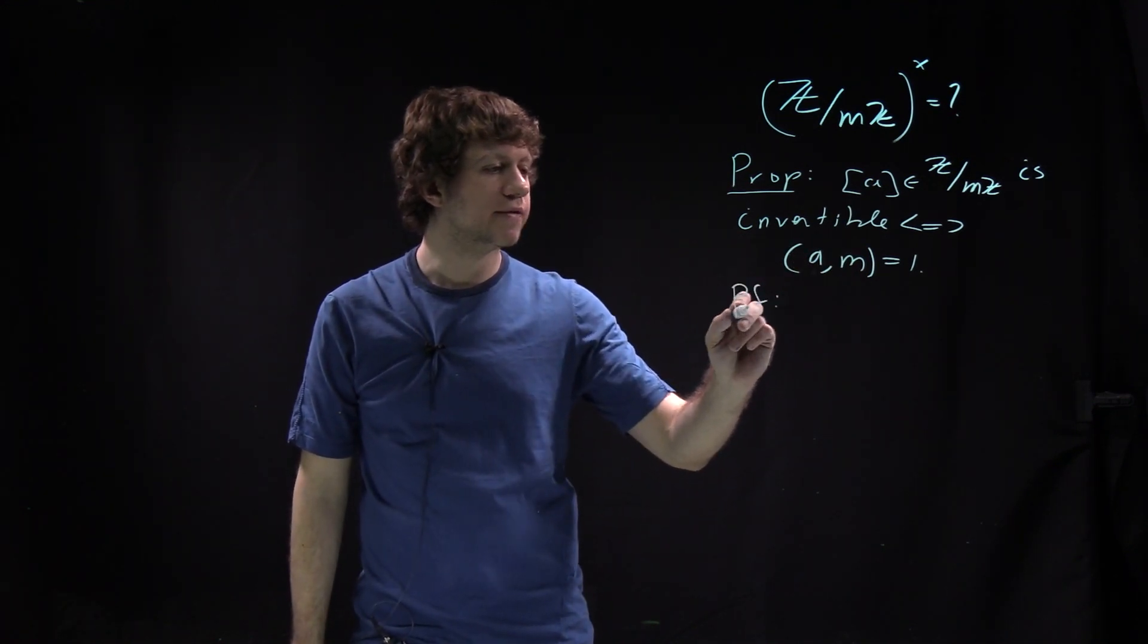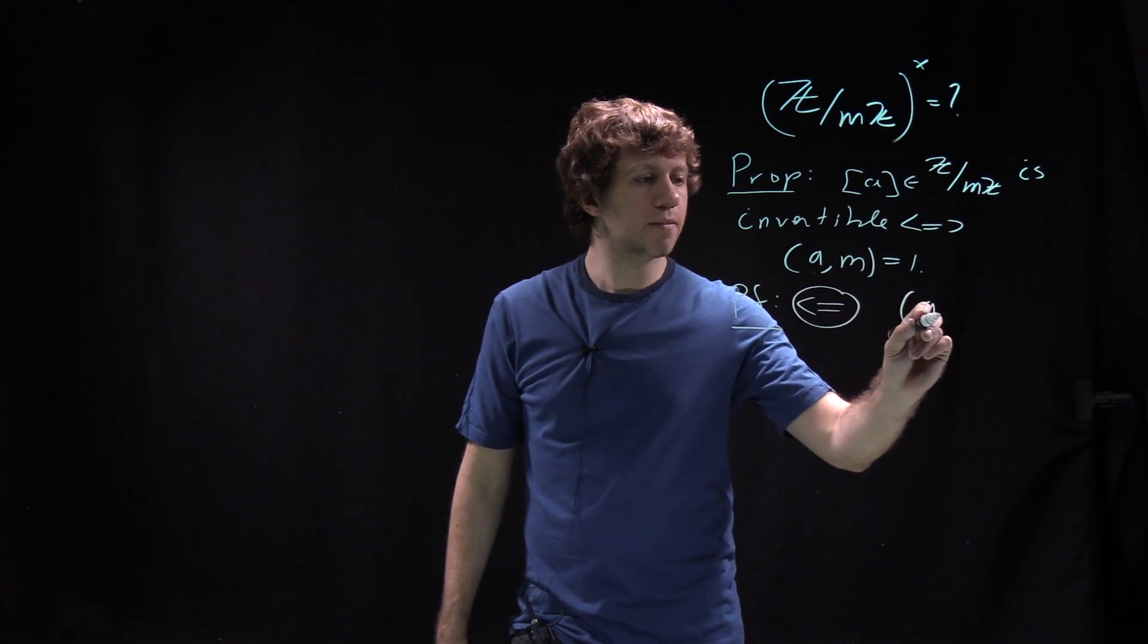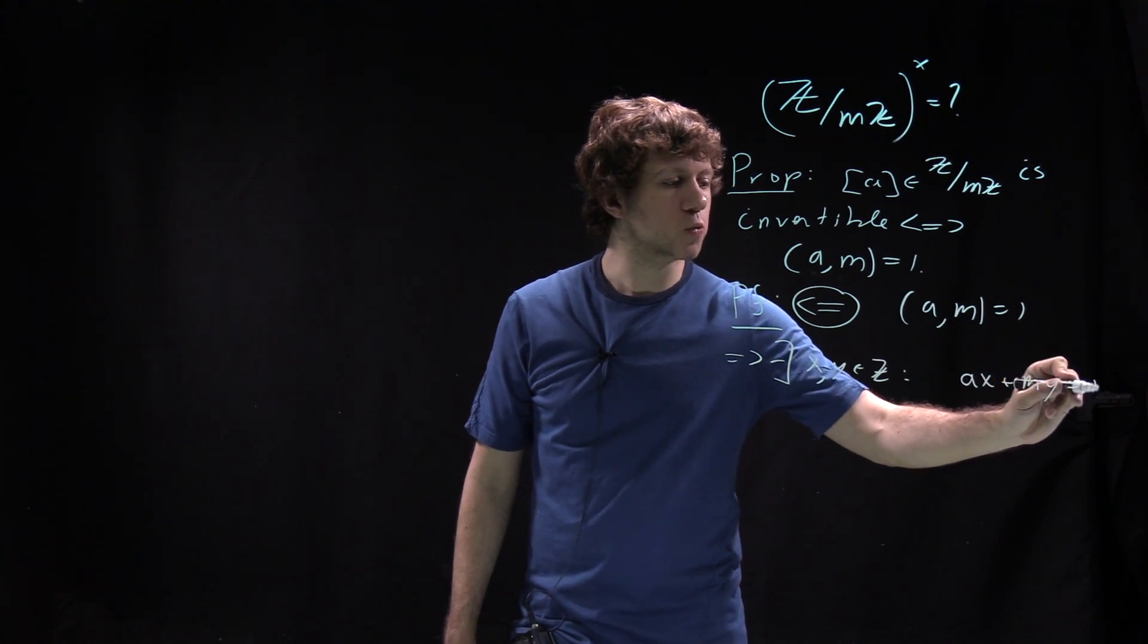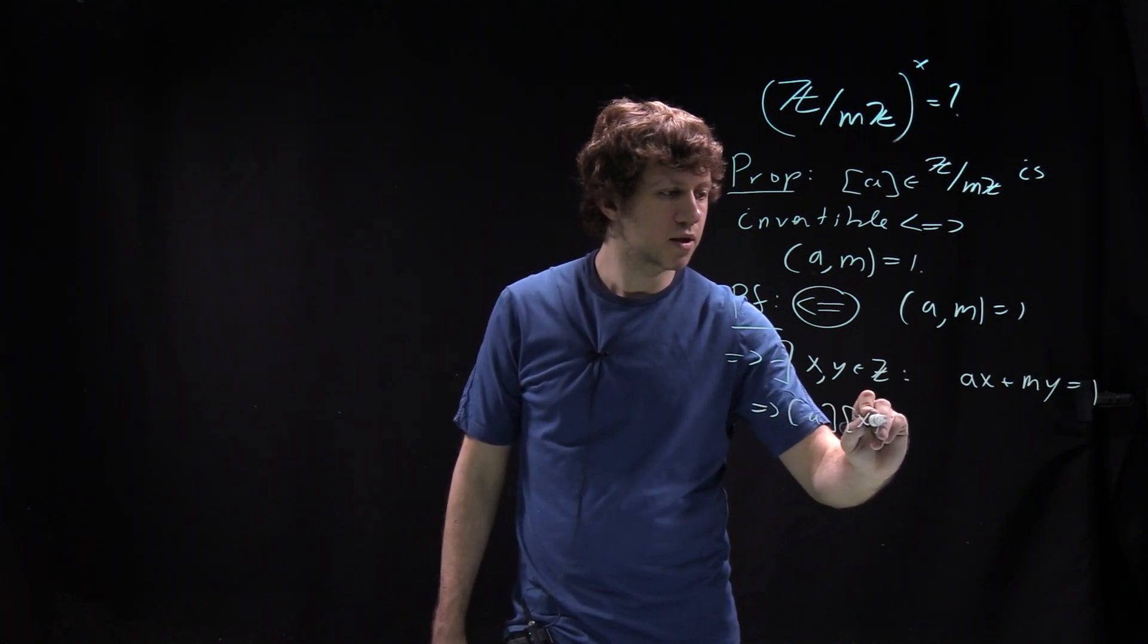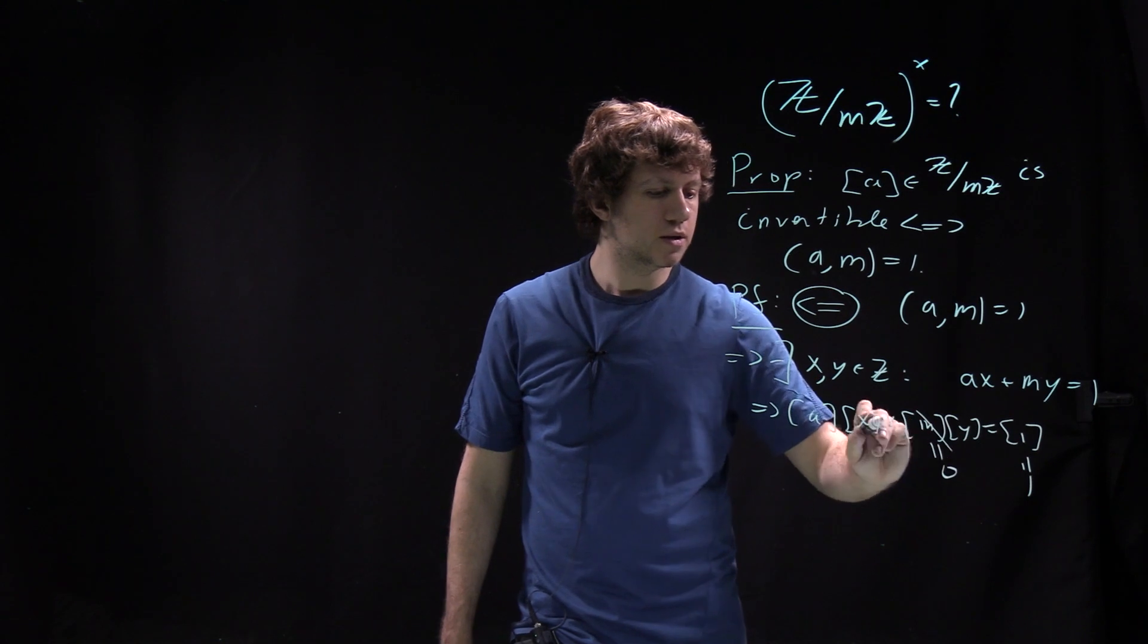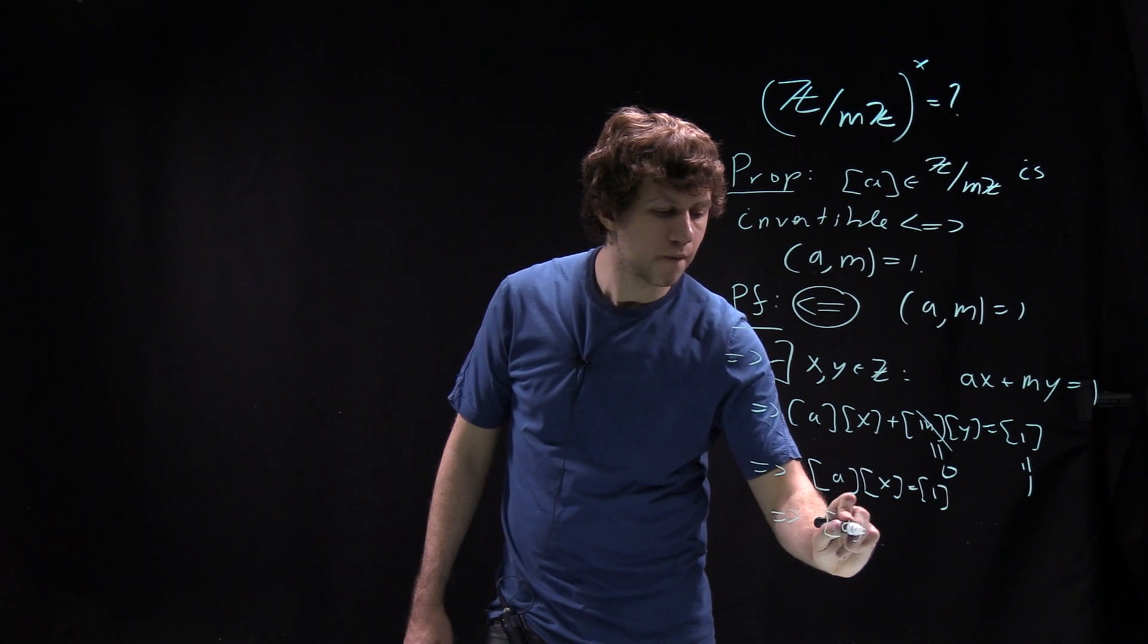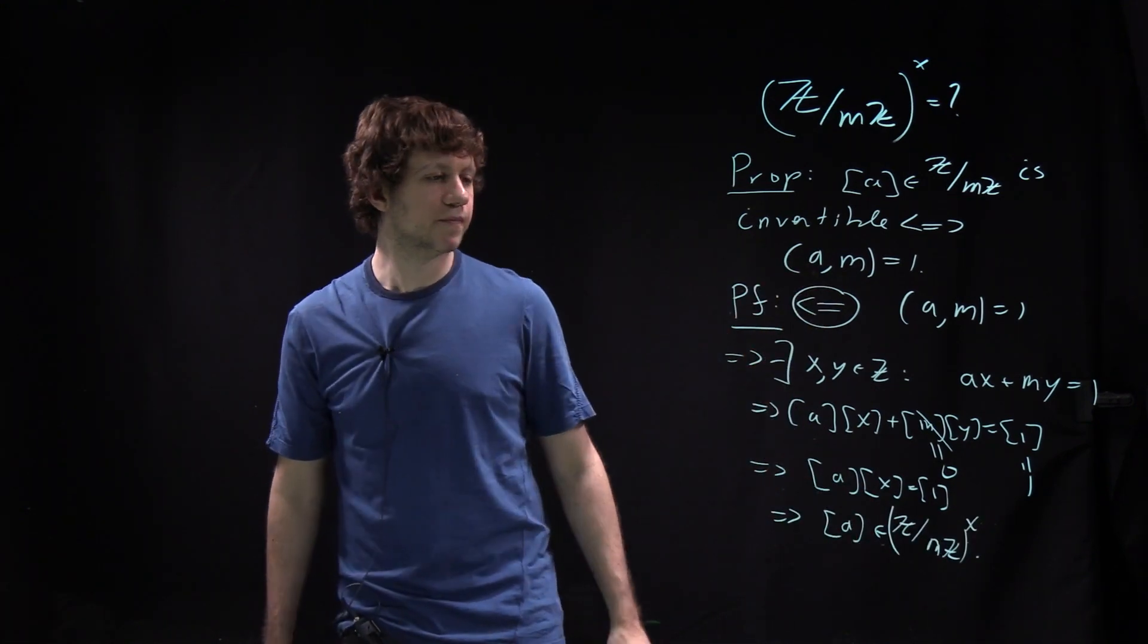The proof is straightforward. Let's do this direction first. If a and m are co-prime, then there exist elements x, y in Z such that ax plus my equals 1. When you look at remainders, class of a times class of x plus class of m times class of y equals class of 1. But class of m is 0, so ax equals 1. Thus a is a unit. We used this property of the greatest common divisor that it's a linear combination of a and m.